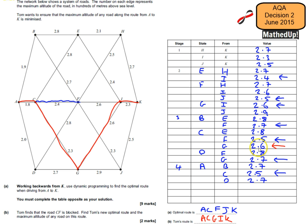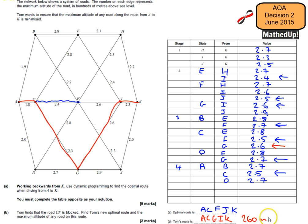So the new optimal route is A, C, G, I, K, and the maximum altitude is 2.6, which is in hundreds of metres above sea level — so 260 metres is the maximum altitude. Thanks very much for joining me, see you next time.